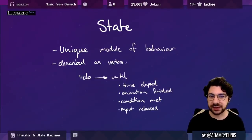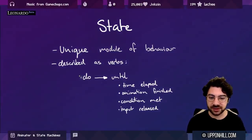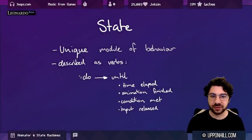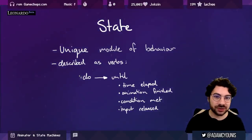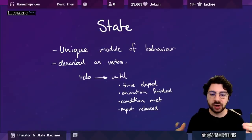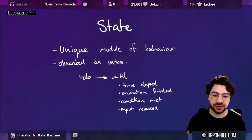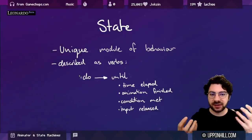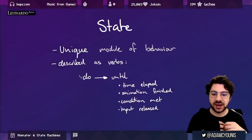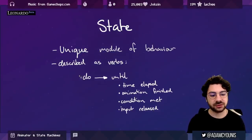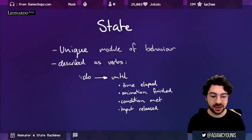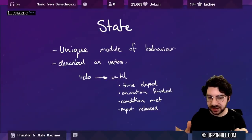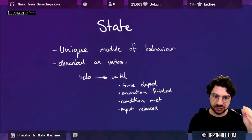The word 'state' gets used a lot here. States are unique modules of behavior, usually described with verb words: walk, run, fall, jump — things that something can do. In the model of a state machine, you have the action and then some condition that exits that action — how long are we doing this until some time has passed, an animation finishes, a condition is met, or a player input is released. This concept of 'doing something until some other thing happens' is important.